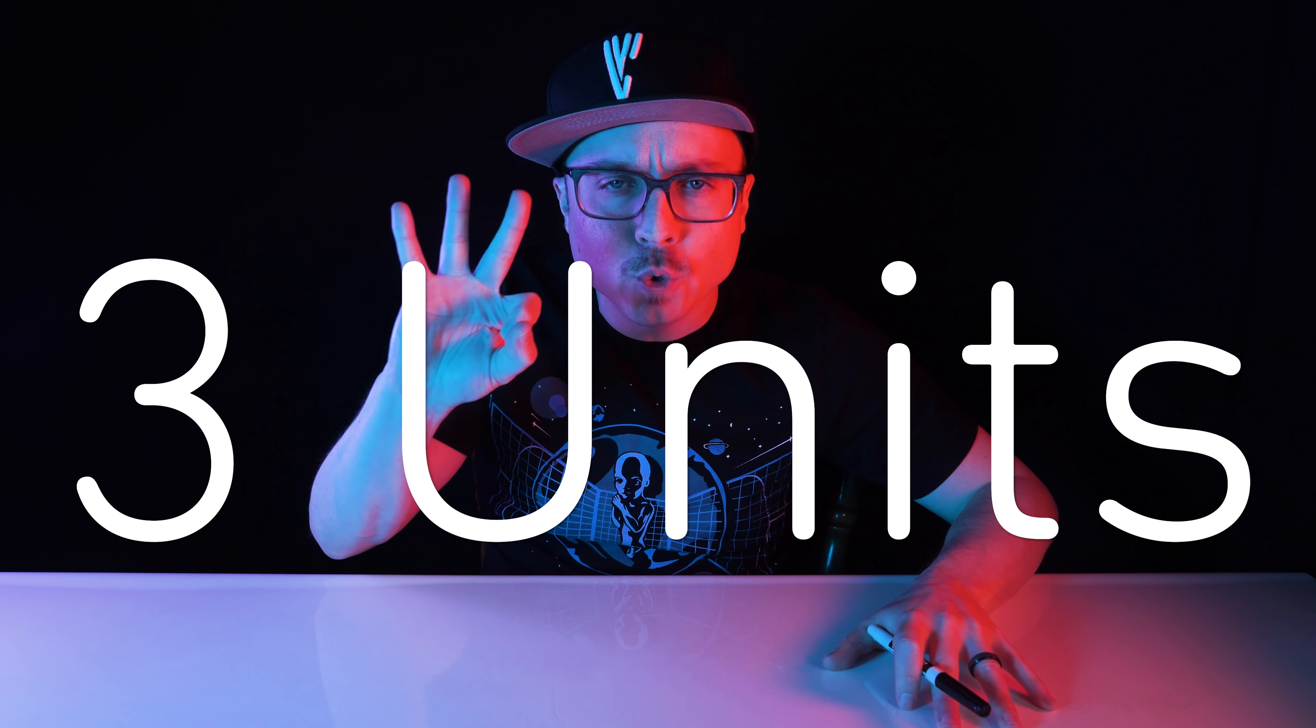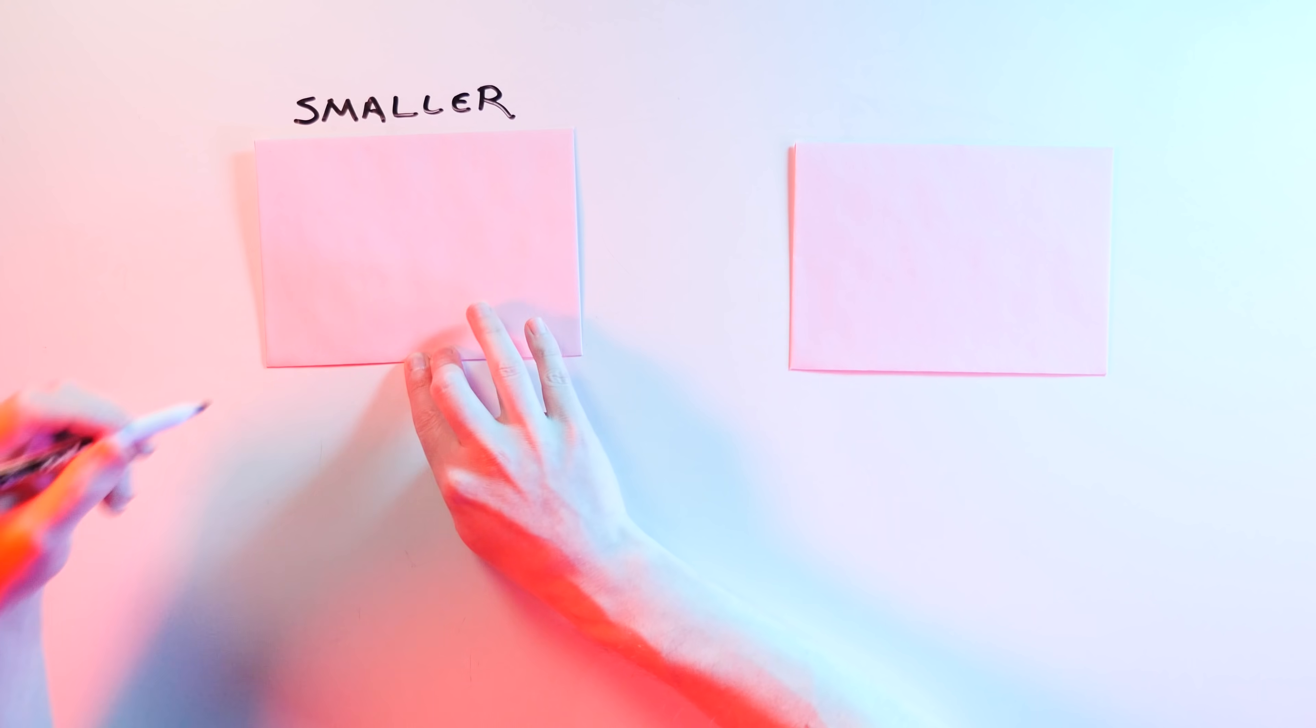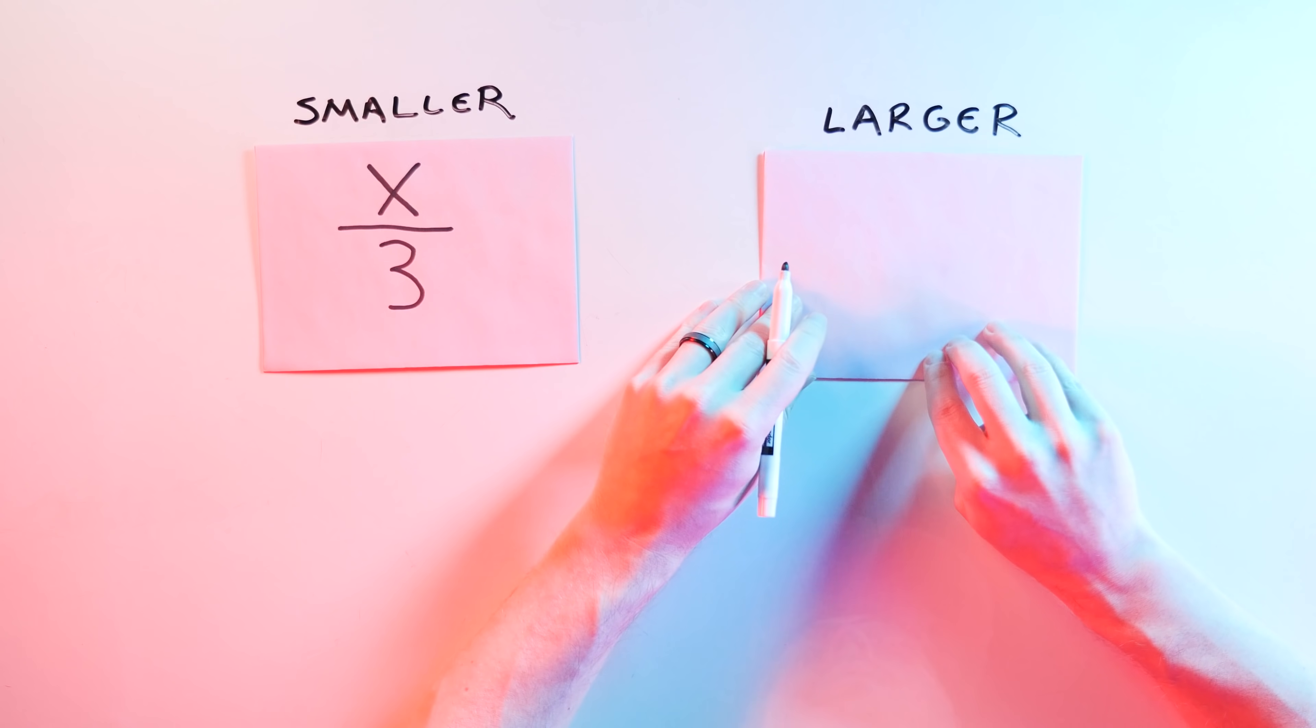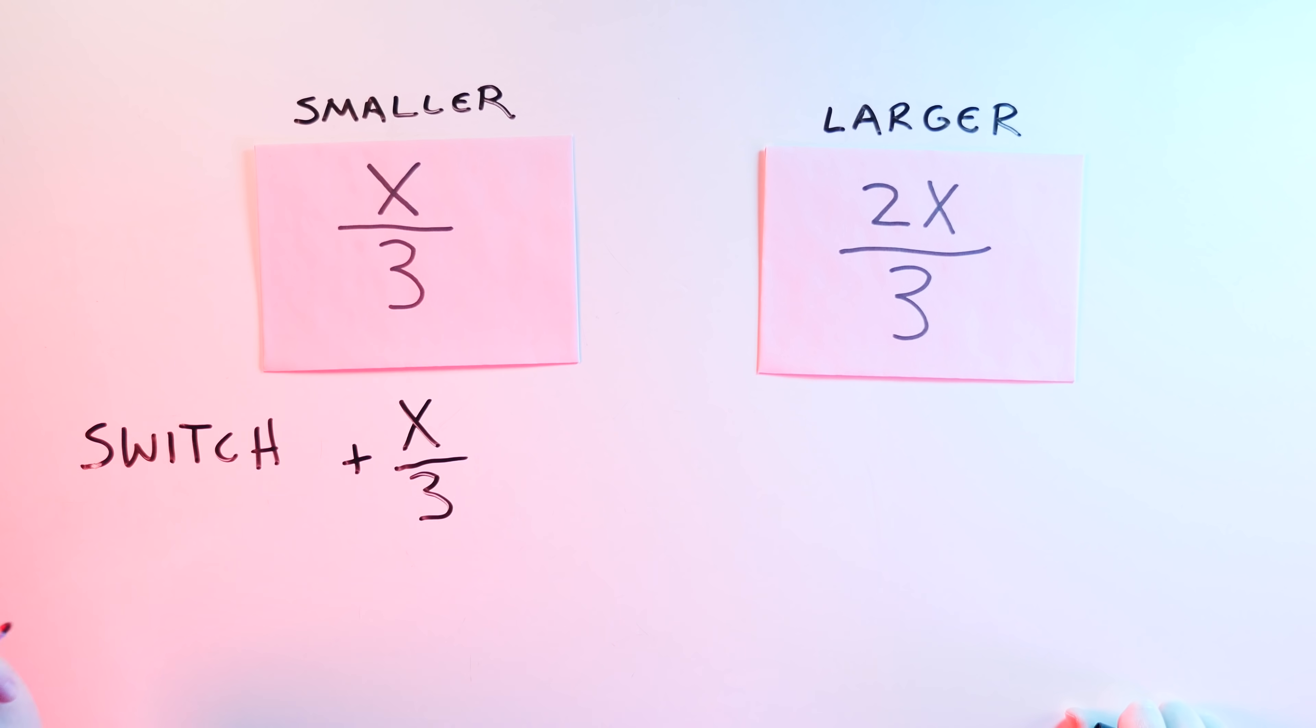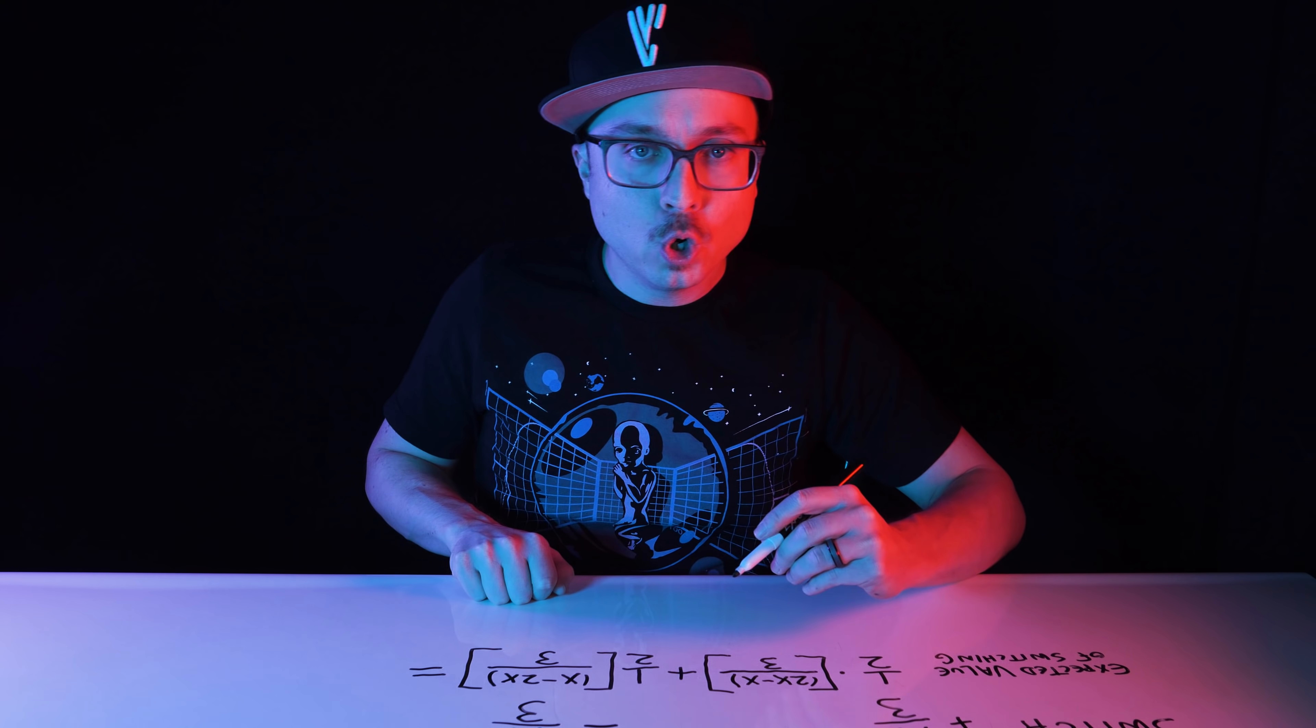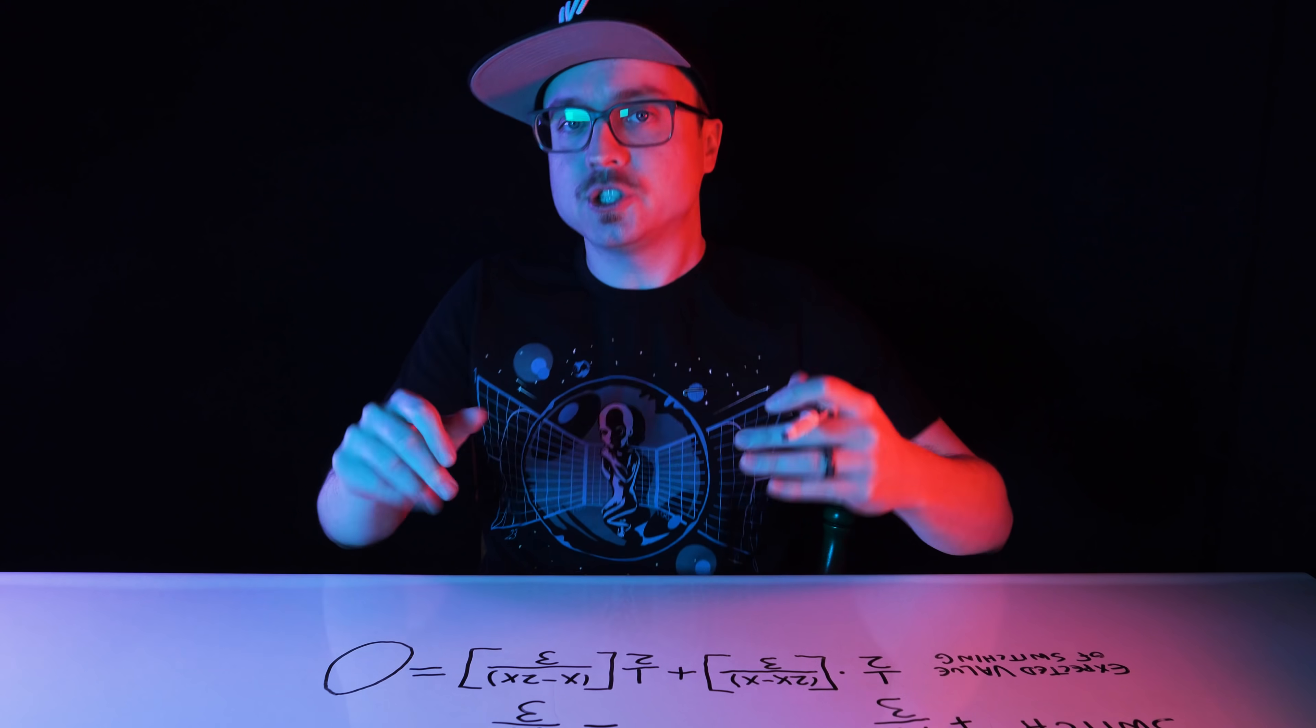Think of it this way. The total sum of money in the envelopes is 3 units. A small unit and then a larger value that's made up of 2 smalls that combine to form a total of x. If you've got the smaller envelope, its value is x over 3. And if you have the larger envelope, its value is 2x over 3. When you switch from small to large, you gain x over 3. And when you switch from large to small, you lose x over 3. So the expected value of switching is 1 half times 2x minus x over 3 plus 1 half times x minus 2x over 3, which equals zero!